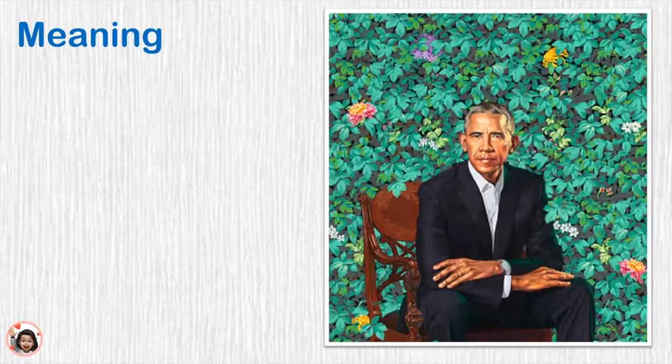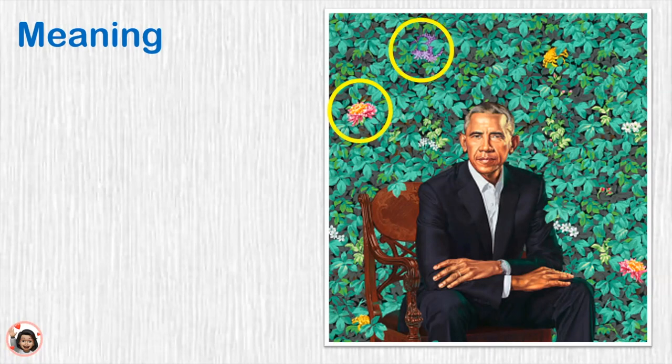Kehinde Wiley teaches us that what you decide to include in a painting is very important. If you look at the painting carefully, around President Obama you will see different types of flowers. Can you see them? They are beautiful. Why did he include all these different kinds of flowers?